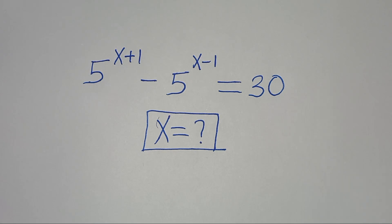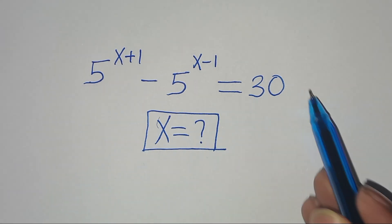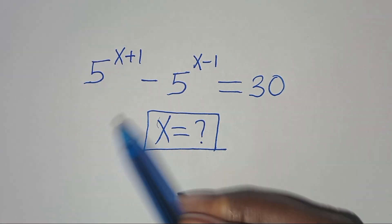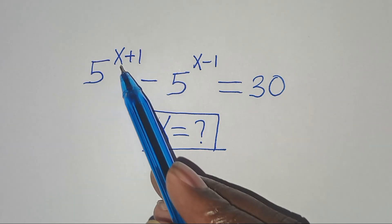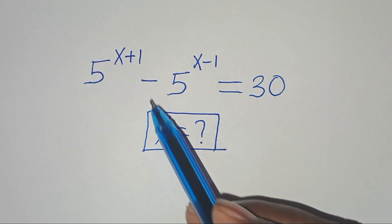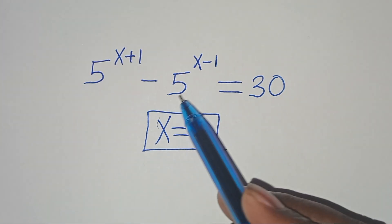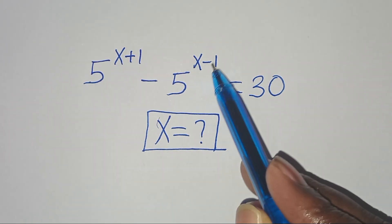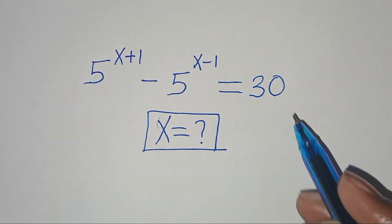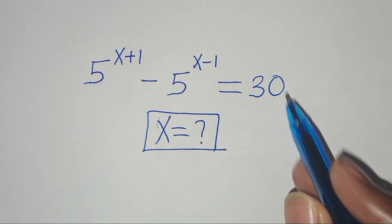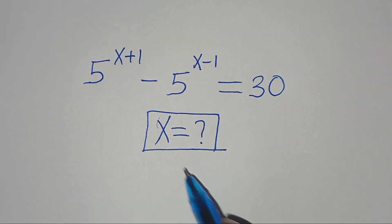Hello everyone, you are welcome to solve this nice exponential equation which is 5 to the power of x plus 1, minus 5 to the power of x minus 1. This is equal to 30. So what is the value of x?